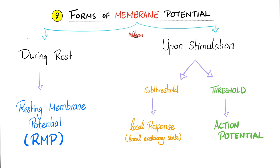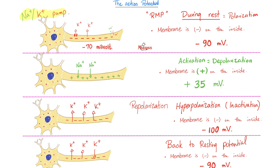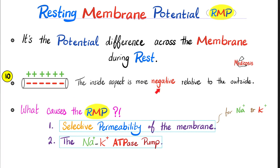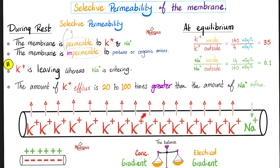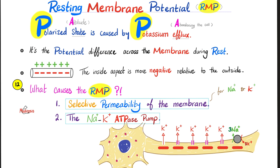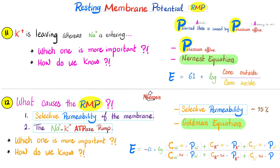Nugget 9 is the most important nugget today: the forms of membrane potential. During rest, it's the resting membrane potential. Upon adequate threshold stimulation, you get an action potential. During resting membrane potential, potassium is leaving. Upon depolarization, sodium is entering. During repolarization, you stop sodium influx and start potassium efflux. The causes of the resting membrane potential are selective permeability and the sodium-potassium ATPase pump, which re-establishes the resting state after the action potential.